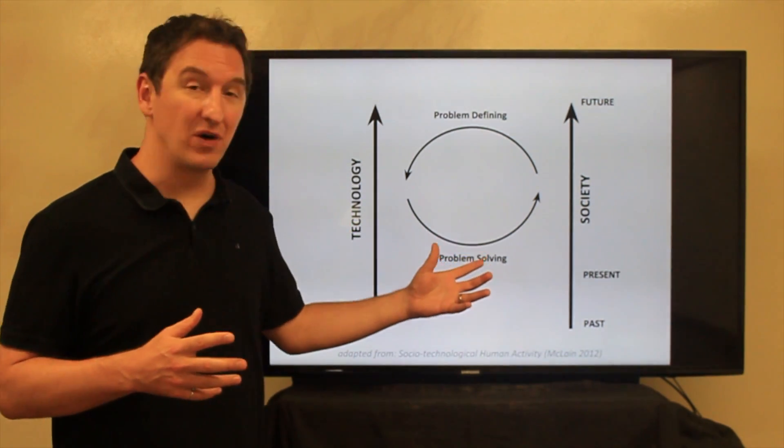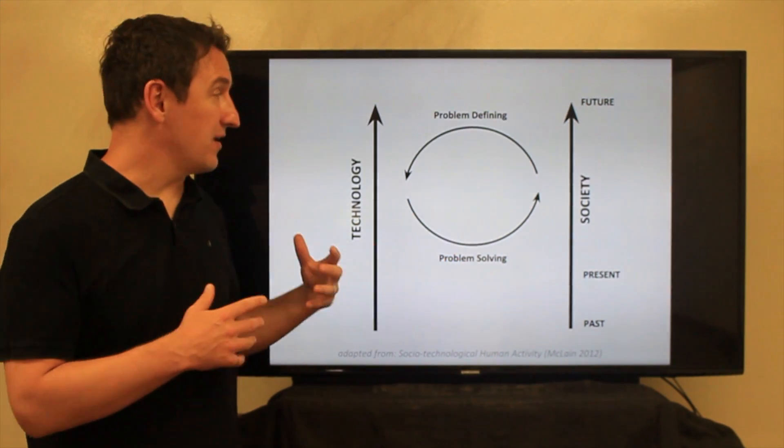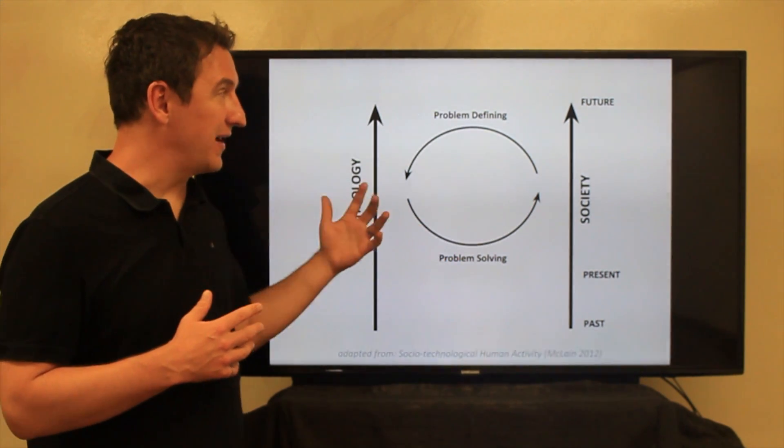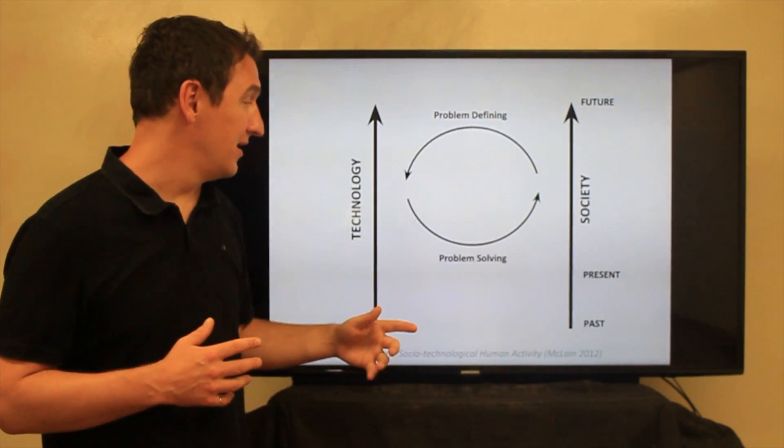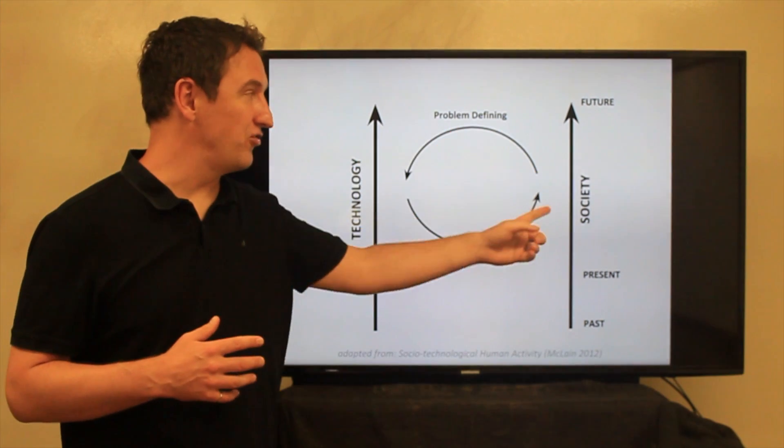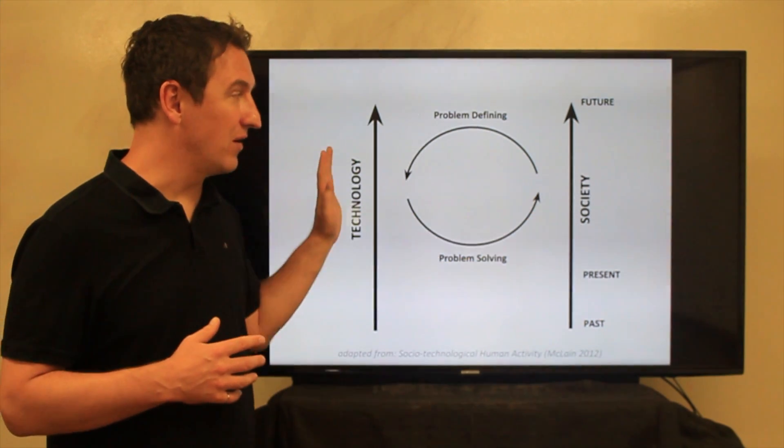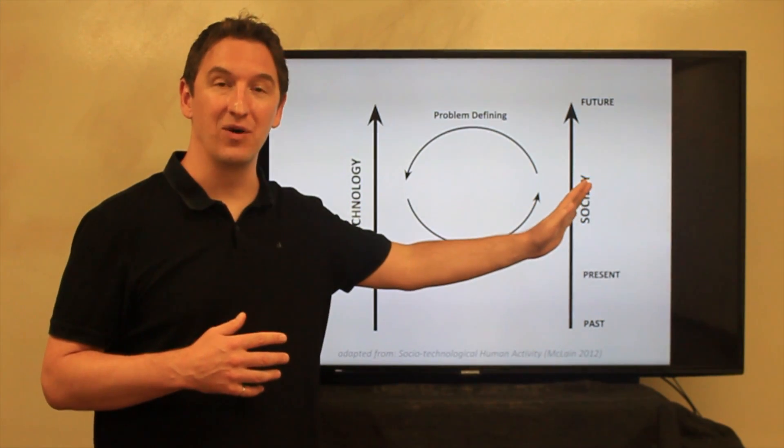In this graphic, which was from a 2012 article by McLean, he's considering the relationship between technology and society as we've progressed from the past, the present, into the future, and basically talking about the very tight relationship between how technology is evolving and how society is evolving over time.